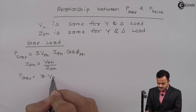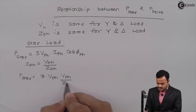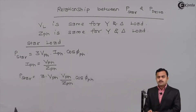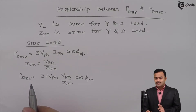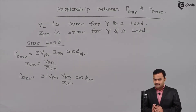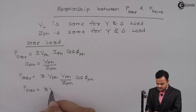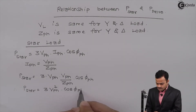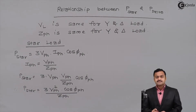P_star equals 3 × V_PH × V_PH divided by Z_PH × cos(φ_PH). We are considering Z_PH is the same — its magnitude and phase angle — hence power factor is also the same whether it's a star load or a delta load. So I will get P_star as 3 × V_PH² × cos(φ_PH) divided by Z_PH. Remember, it is a star connected load.